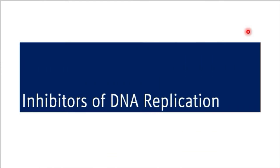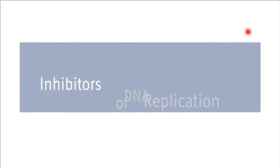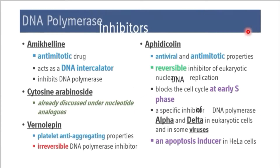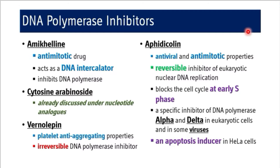The specific learning objectives of this session are: at the end of the session, the student shall be able to enumerate various inhibitors of DNA replication. The enzymes which are required for DNA replication, like DNA polymerase — the inhibitors of those enzymes will be the inhibitors of DNA replication.